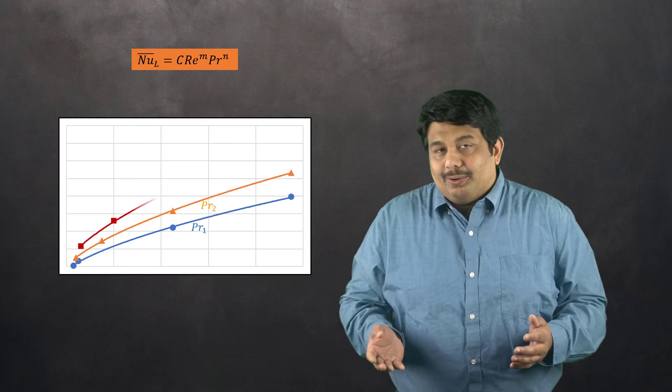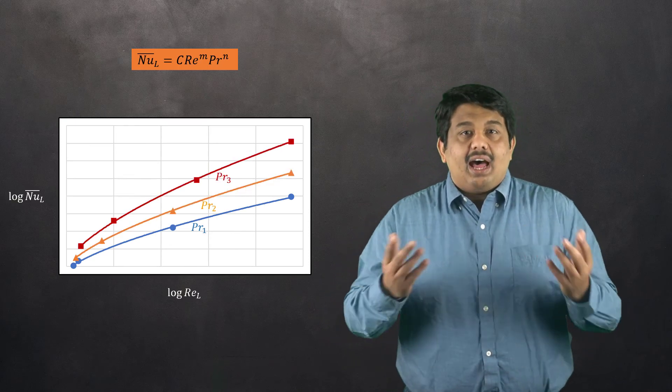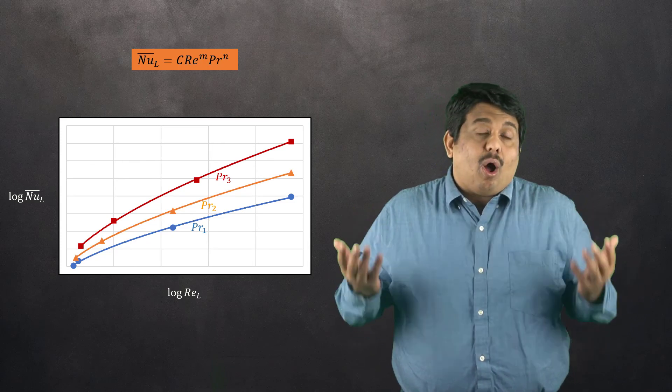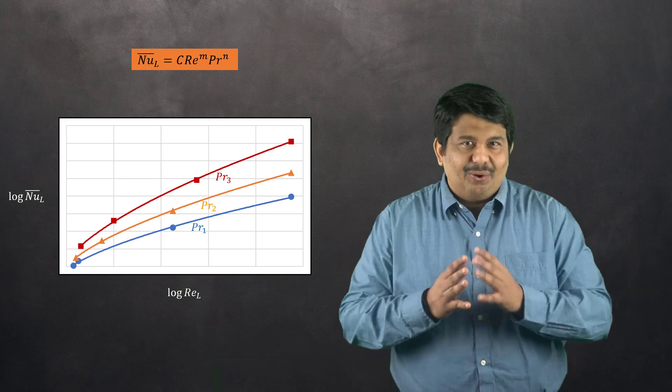The values of C, M, and N are dependent on the geometry of the object and the flow type, and are oftentimes independent of the fluid itself.